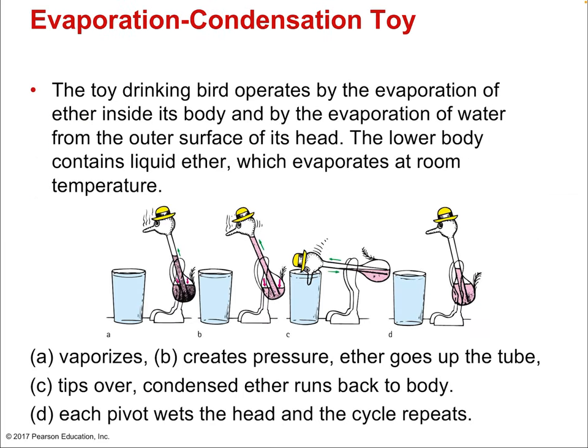A cool demonstration is the evaporation-condensation toy — the drinking bird. It operates by evaporation of liquid ether inside its body and by evaporation of water from the outer surface of its head. The ether vaporizes, creates pressure, goes up the tube, tips the bird over, condensed ether runs back down, the head is re-wetted, and the cycle repeats. It seems like perpetual motion, but it's just an energy flow between liquid water and liquid ether through their phase changes.